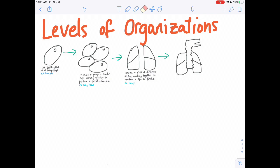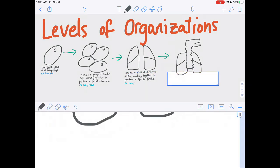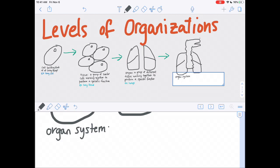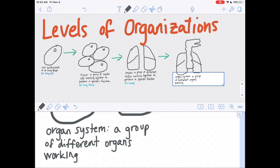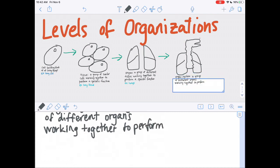All right, so that is an organ system. So let's label it the organ system here. Make that a little smaller. So an organ system, you can probably guess, is a group of different organs working together to perform a specific function.